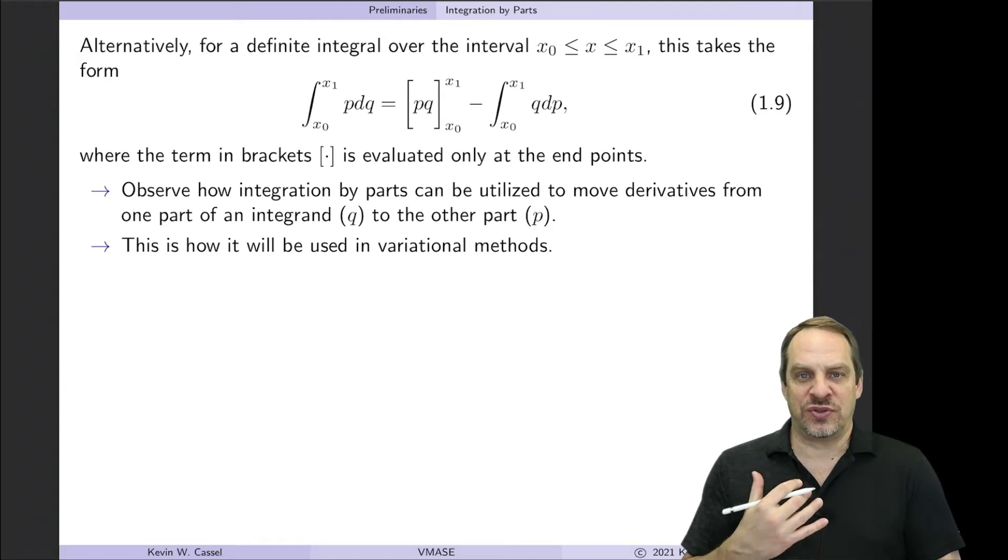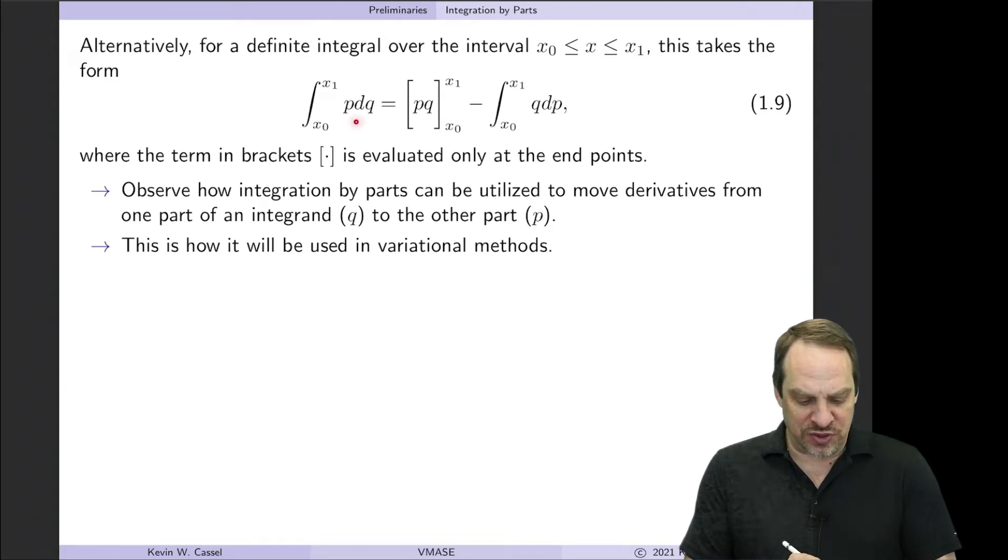Now the reason why this is so useful is because you'll notice what it does. It moves derivatives from one part of the integrand to the other part. So here we have the integral of p times dq, whereas here we have, don't forget the minus sign, the integral of q dp. So we've moved the derivative off of the q and onto the p. And that's how we're going to use integration by parts throughout our discussion of variational methods.